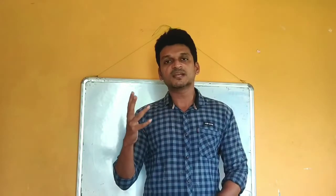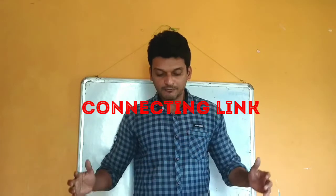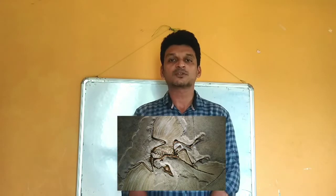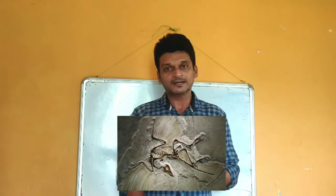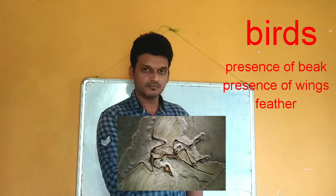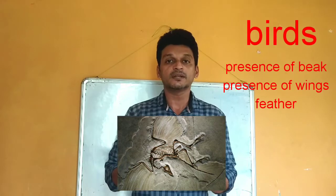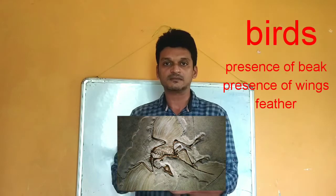Our fifth evidence supporting the theory of evolution involves connecting links. This is the fossil of Archaeopteryx, which was found in Germany. When the characteristics of this fossil were studied, at first sight it looked like a bird — it had feathers, wings, and a beak. But scientists were surprised to find that the same fossil also contained some characteristics of reptiles.